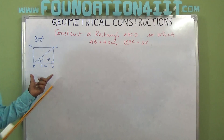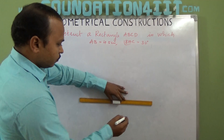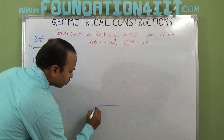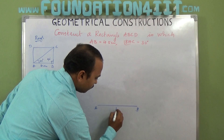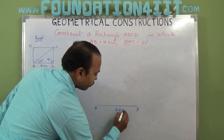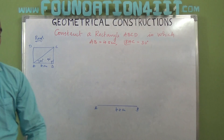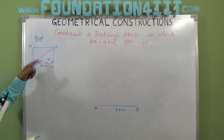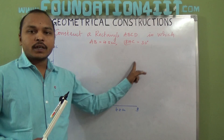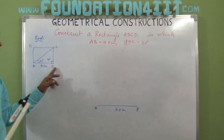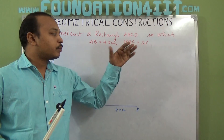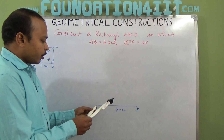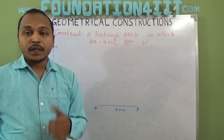First, draw a line segment AB of 4.5 cm. Now the angle BAC is given as 30 degree, so we will construct a 30 degree angle here. And at B it is 90 degree, so we will construct a 90 degree angle there. Both lines will join at one point — that is nothing but point C. First of all at point A we need to construct a 30 degree angle.